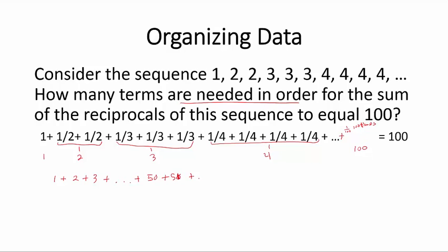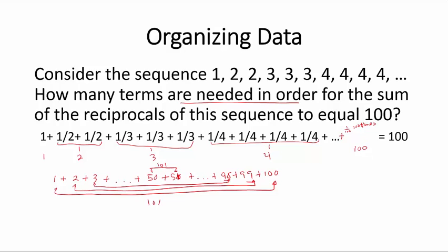1 plus 2 plus 3 plus up to 50 plus 51 plus up to 98 plus 99 plus 100. We notice that 1 plus 100 is equal to 101, and 2 and 99, the sum of them is also 101. The sum of 98 and 3 is also 101, and the sum of 50 and 51 is also 101. So we have 50 such pairs.